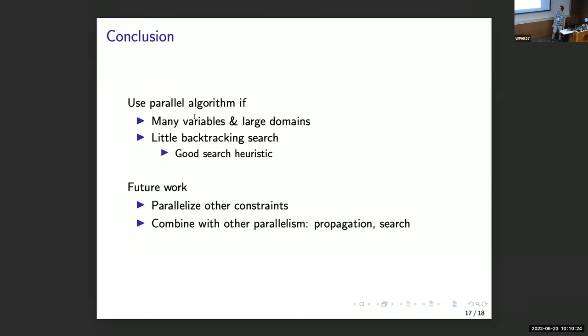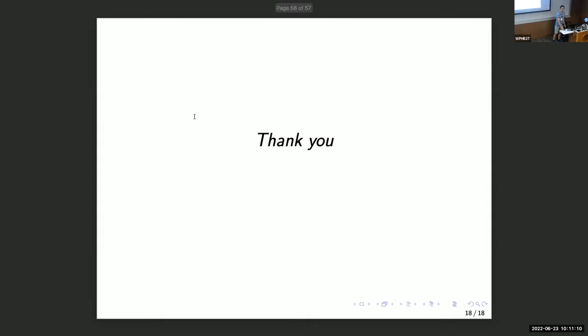So now I can finish with my conclusion. So yes, you can use this parallel algorithm if you have a problem with many variables and large domains and if you only require a little backtracking search. Yes, you need to have a good search heuristic, but that should not be a limitation because in such large problems, you need to have a good heuristic anyway. And as future work, we plan to parallelize more constraints. I think I like to read the MDD constraint paper now. I'm really curious what can be done there. And we want to combine with other types of parallelism like propagation and search. Thank you for your attention.